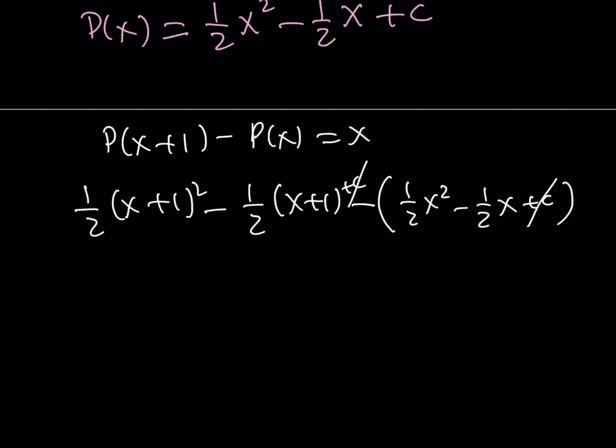And if you go ahead and subtract these two things, you're going to get 1 half times this minus that, which is 2X plus 1. And then these two are going to give you basically negative 1 half times X plus 1 plus X.